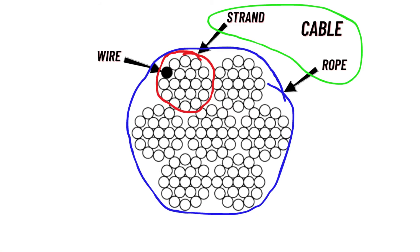So there you have it: wire, strand, rope — with cable being rope and strand. If it helps to remember these things, think of scaling through natural systems. Like a tree: twig, branch, trunk — moving up in scale. Or with water: river, sea, ocean. Wire, strand, rope follow the same kind of progression from smallest to largest.